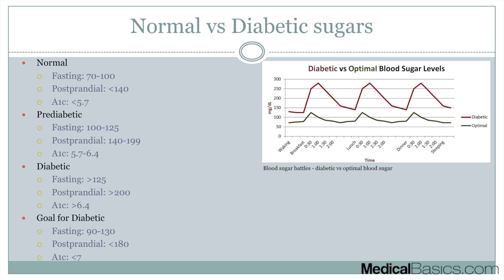Let's talk about normal versus diabetic blood sugars. In normal patients, fasting blood sugar — that's when you wake up before eating anything — should be 70 to 100. Post-prandial, right after you eat, we want less than 140. And an A1C of less than 5.7.